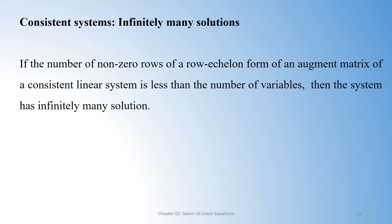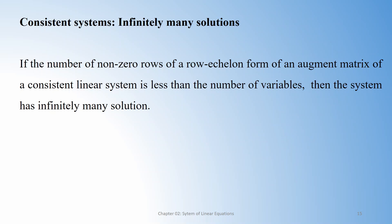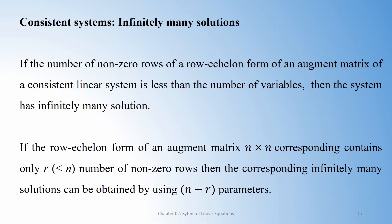Remember, for this to apply, the matrix should not contain any row where the left-hand partition is all zeros and the right-hand side is non-zero. If there is no such row and the number of non-zero rows is less than the number of variables n, the system has infinitely many solutions. To write the solution, you need n minus r parameters, where r is the number of non-zero rows.